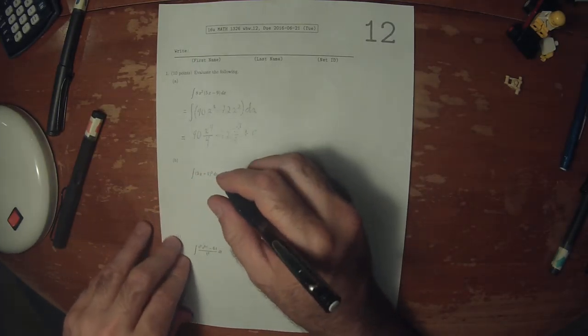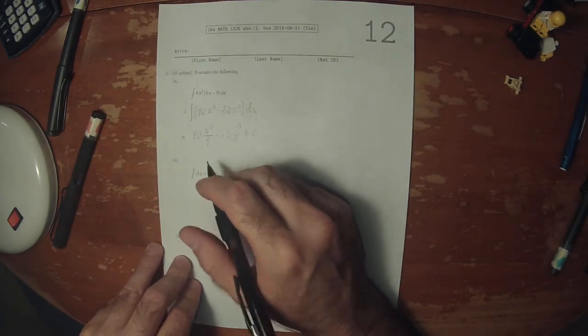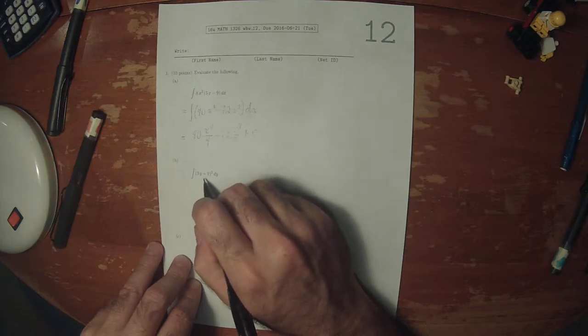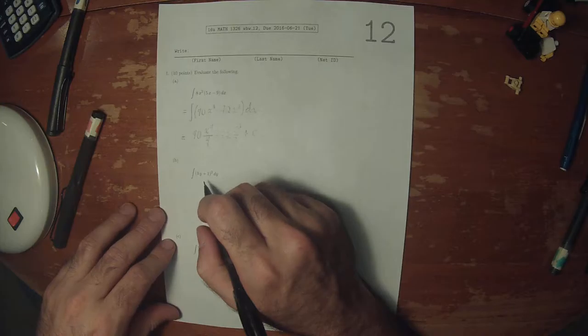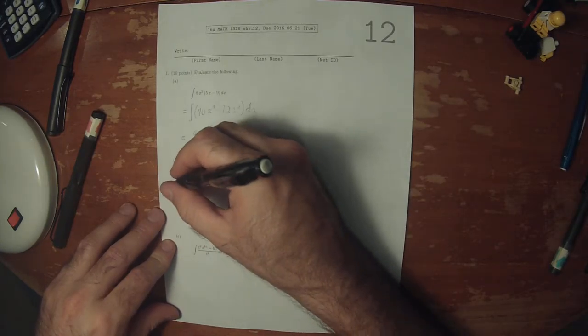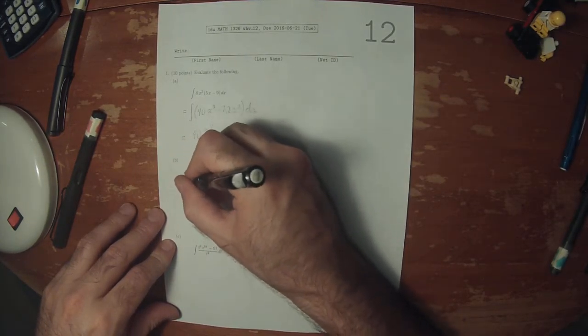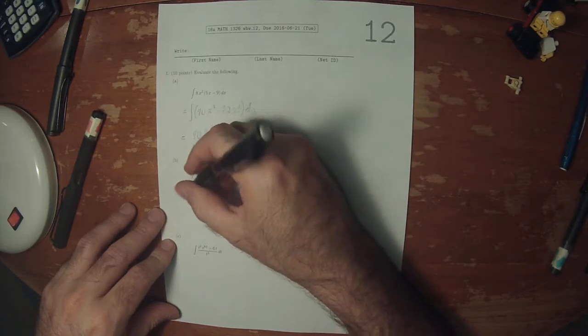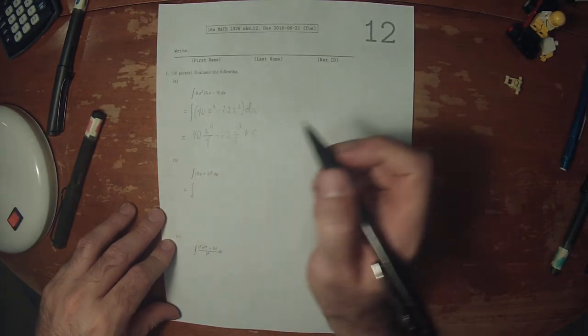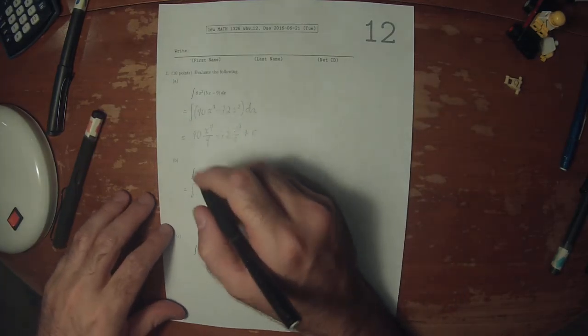For the next one, once you learn how to do substitutions you could do this with a substitution, but this exercise was given before substitutions were demonstrated in class. So in order to solve this without a substitution, we'll need to multiply this out.